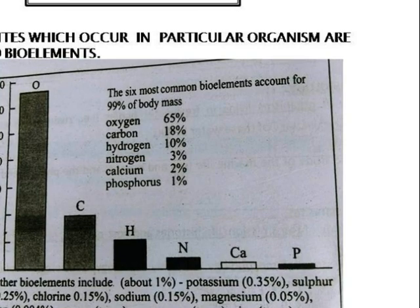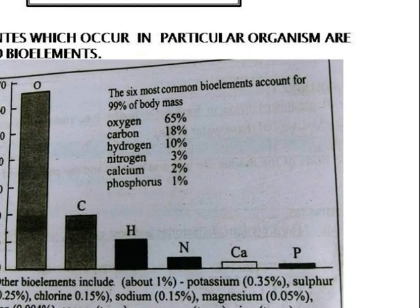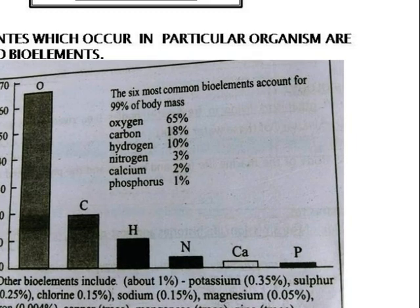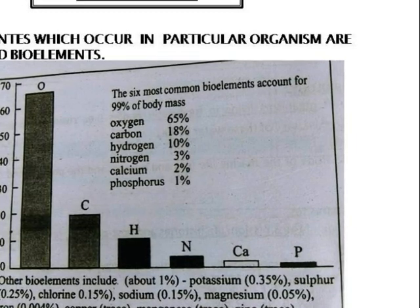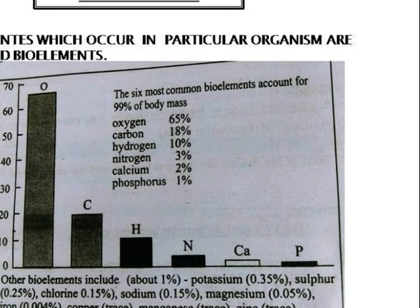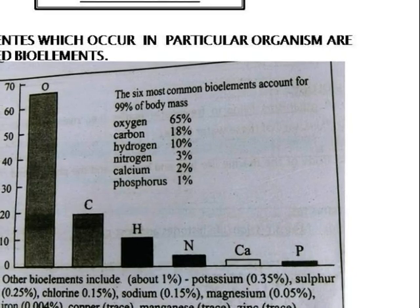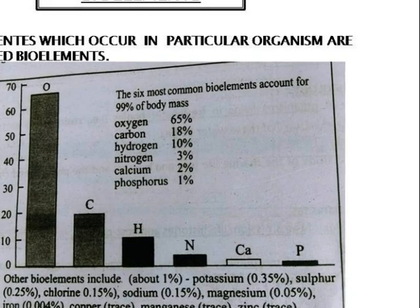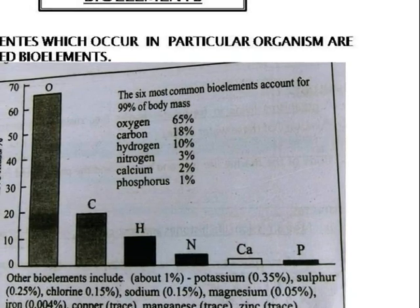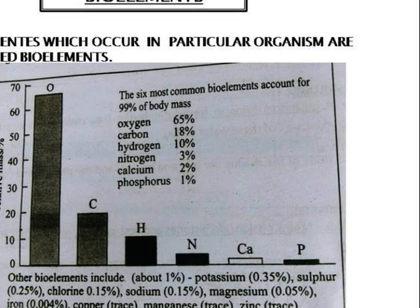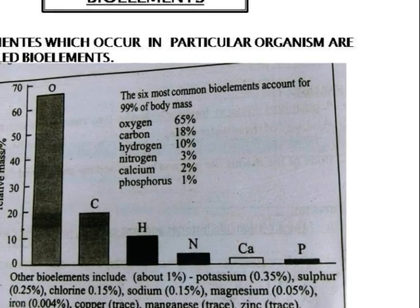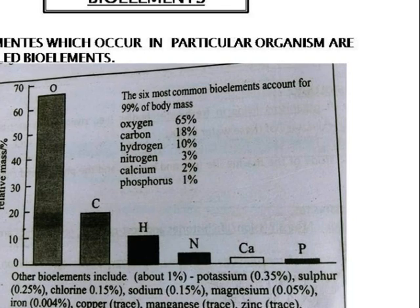Bioelements: the elements which occur in a particular organism are called bioelements. There are more than 92 natural elements, and only 16 are used in forming the chemical compounds from which living organisms are made. These 16 elements, along with a few others found in an organism, are the bioelements.